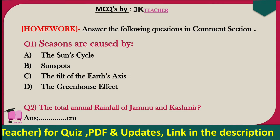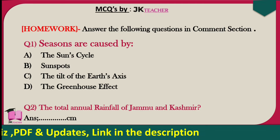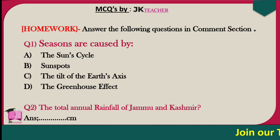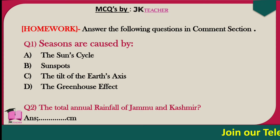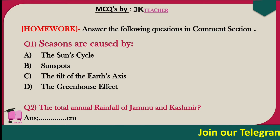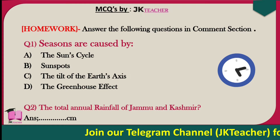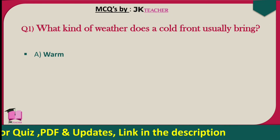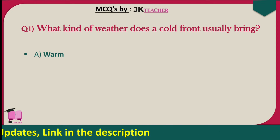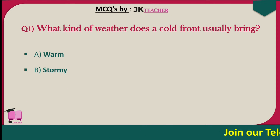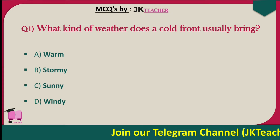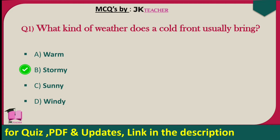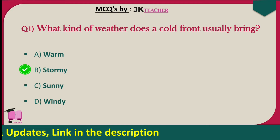The first question is: the seasons are caused by — the sun's cycle, sunspots, the tilt of the earth's axis, or the greenhouse effect. Next question: what kind of weather does a cold front usually bring? Options are warm, stormy, sunny, and windy. Cold weather front usually brings stormy weather.